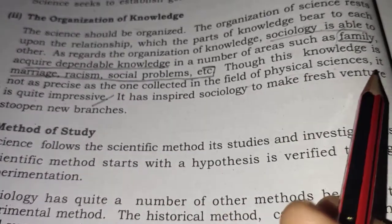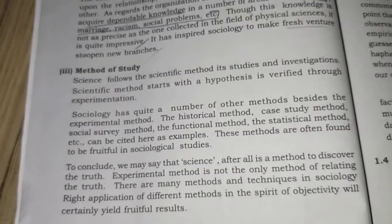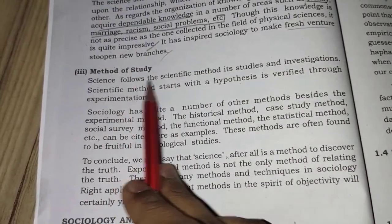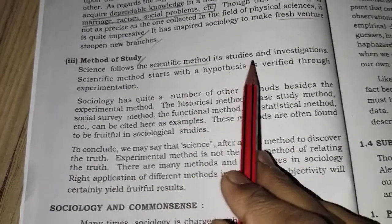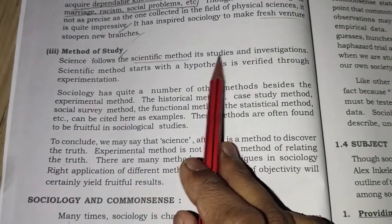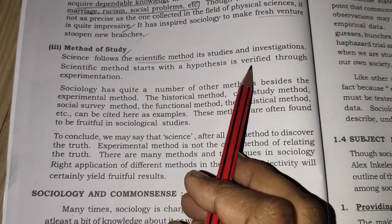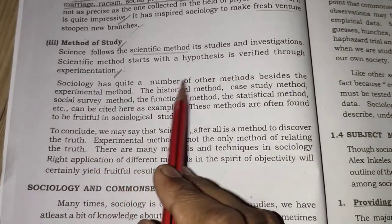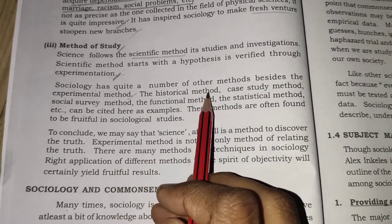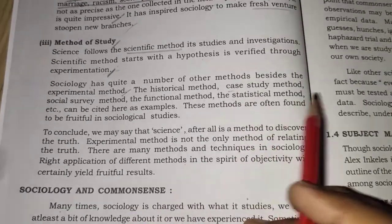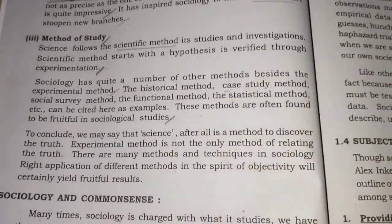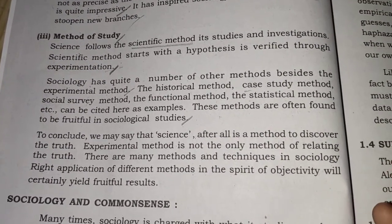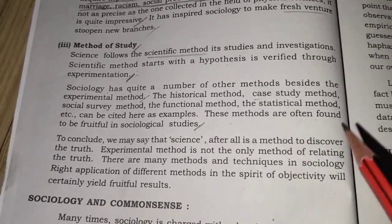It has inspired sociology to make fresh ventures and open new branches. Moving on to method of study, science follows the scientific method. Scientific method starts with a hypothesis that is verified through experimentation. Sociology has quite a number of other methods besides the experimental method: the historical method, case study method, social survey method, the functional method, and the statistical method. These methods are often found to be fruitful in sociological studies.